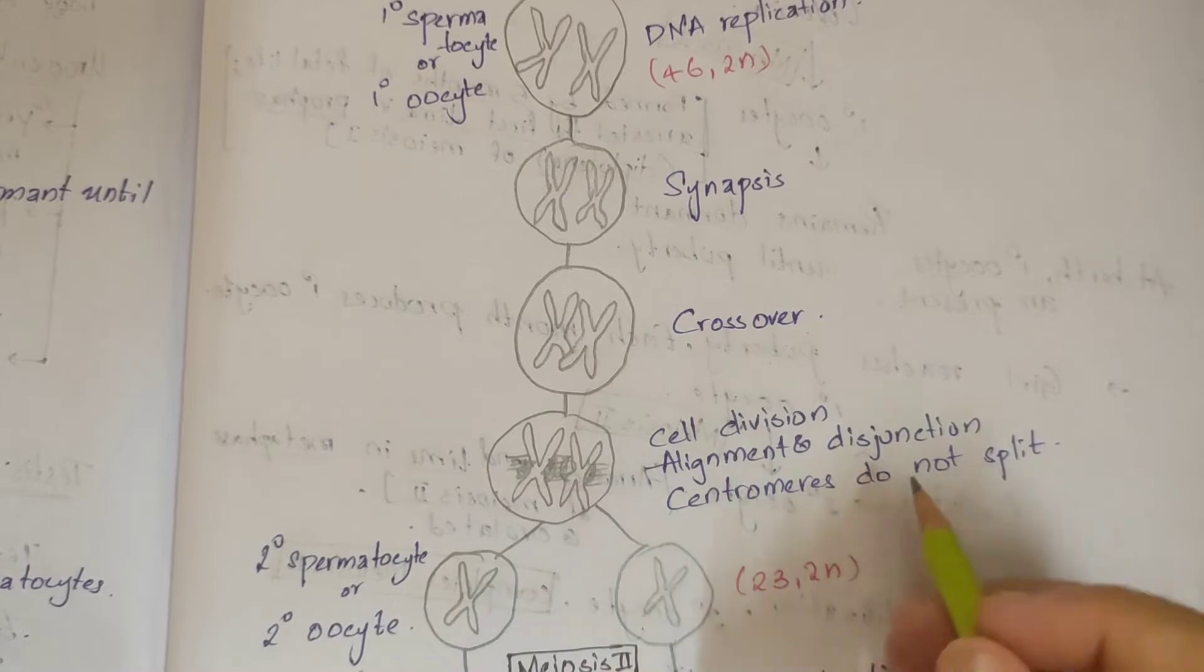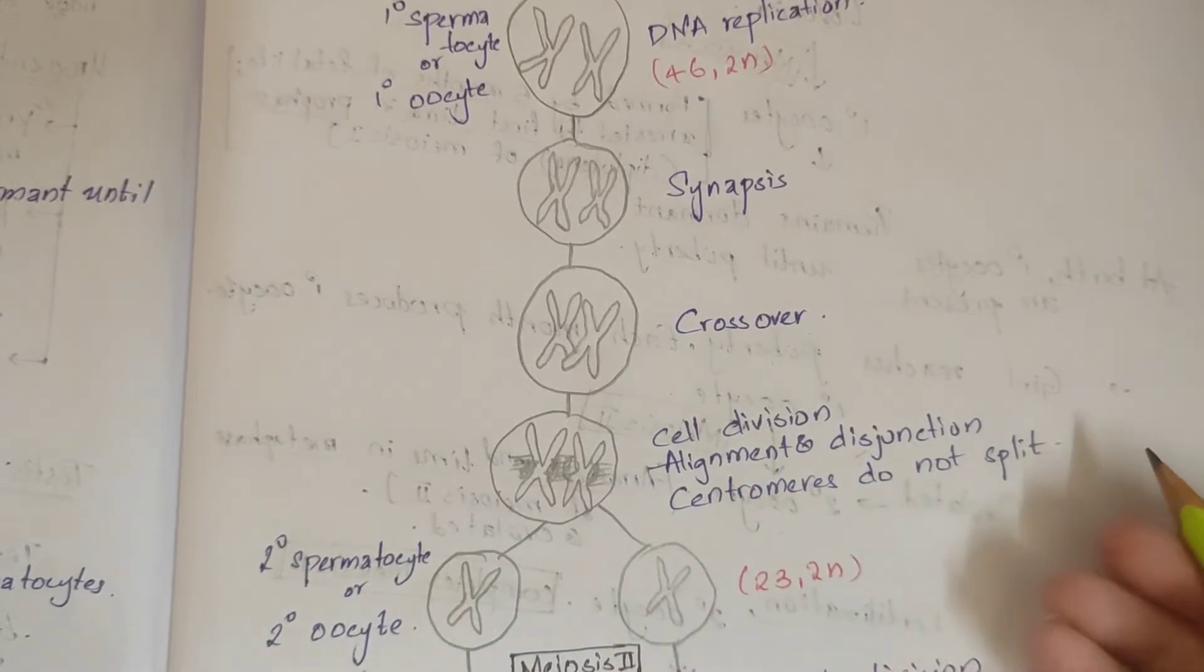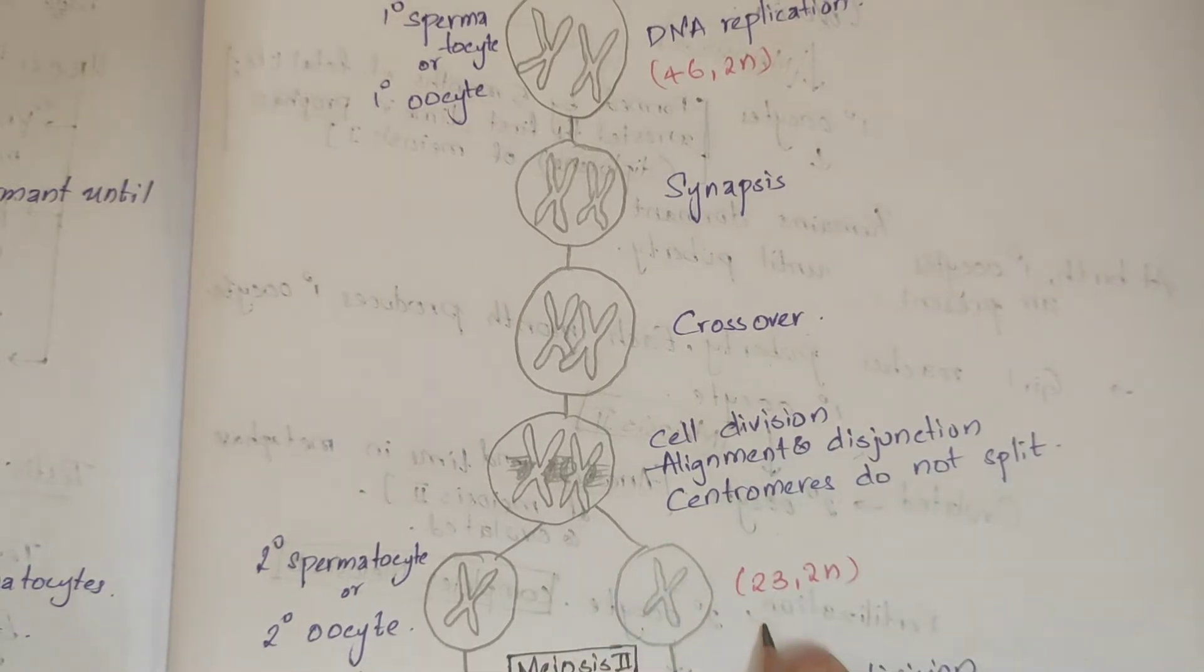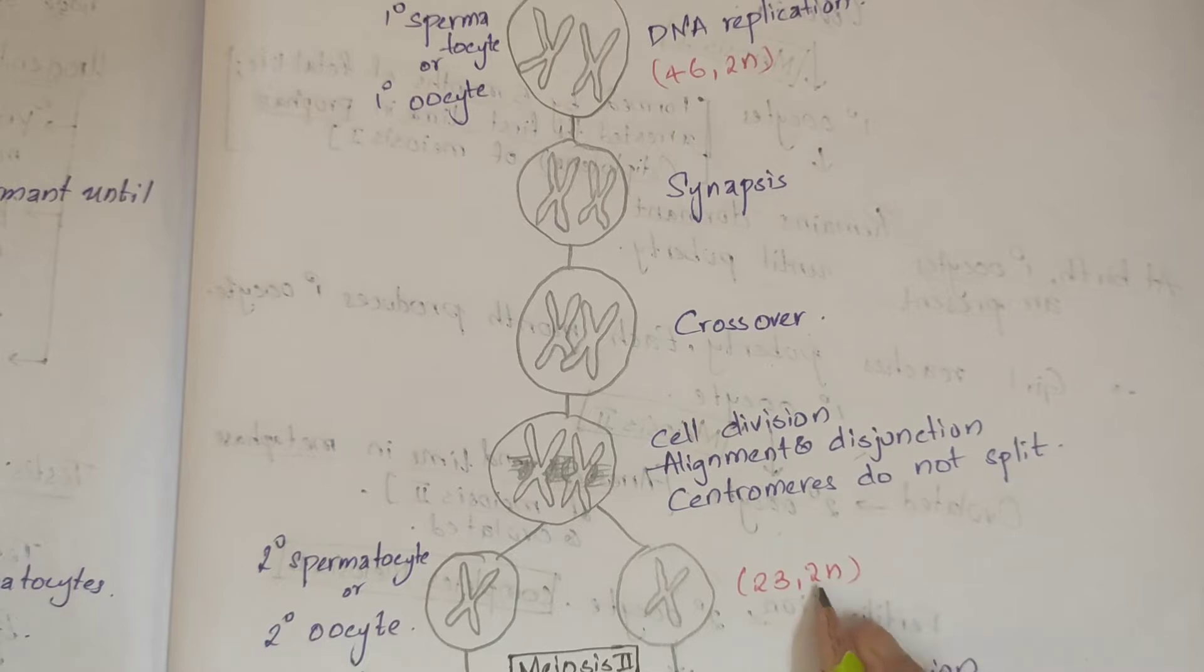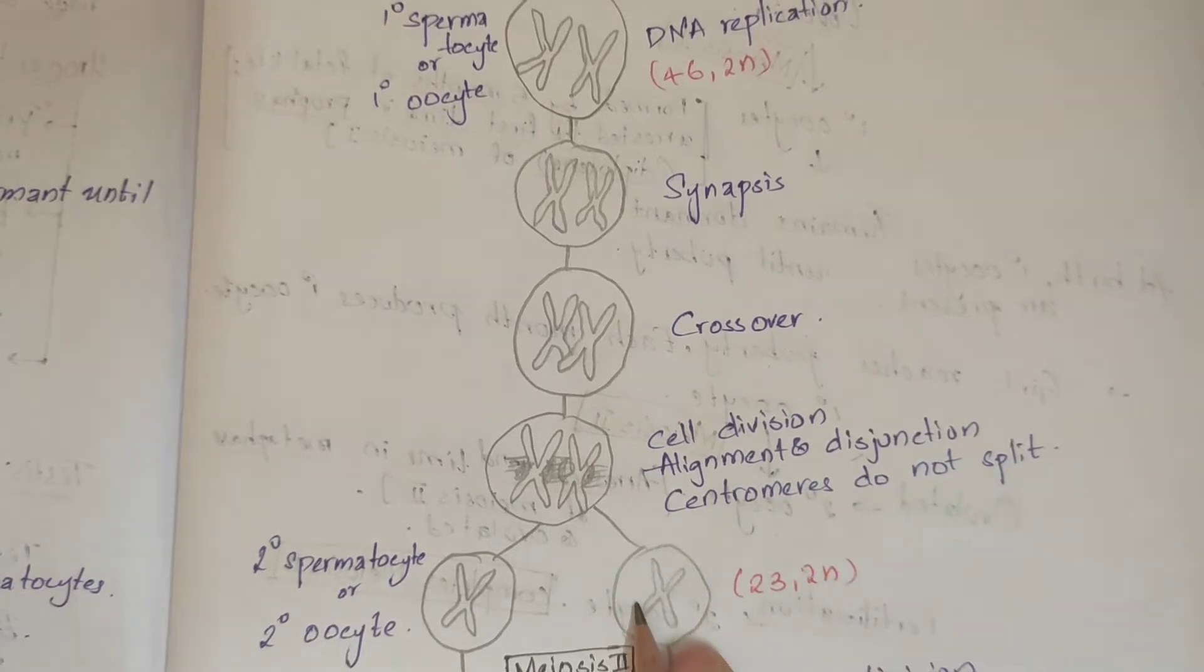Disjunction is the separation of the 46 homologous chromosome pairs into two daughter cells, each containing 23 chromosomal pairs. In this disjunction, there is no centromere splitting.